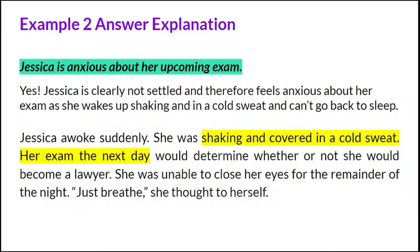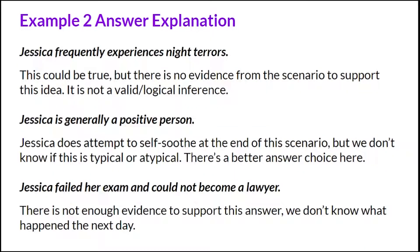Let's take a look at the incorrect answers. 'Jessica frequently experiences night terrors' — this could be true, but there's no evidence from the scenario to support this idea, so it's not a valid or logical inference. 'Jessica is generally a positive person' — Jessica does attempt to self-soothe at the end of the scenario, but we don't know if this is typical or atypical, and there's a better answer choice. 'Jessica failed her exam and could not become a lawyer' — there's not enough evidence to support this; we don't know what happened the next day.